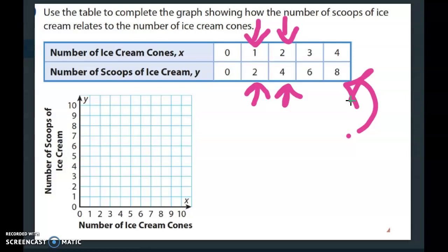So the first one they want us to plot is 0, 0, which that is always our origin.